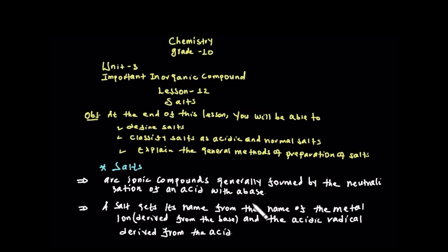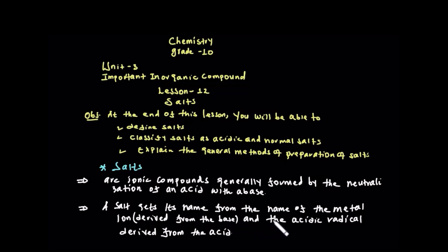Salt gets its name from two parts: the metal cation, which is derived from the base, and the acidic radical, which is derived from the acid.